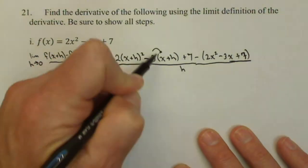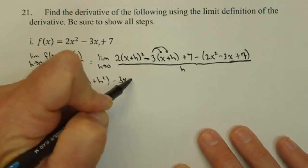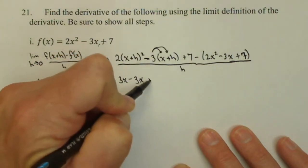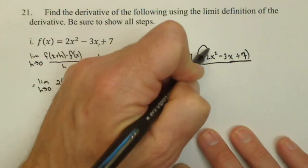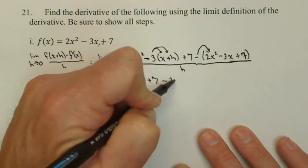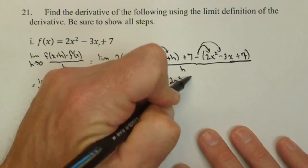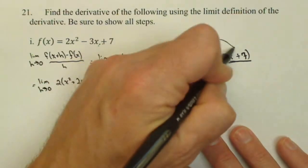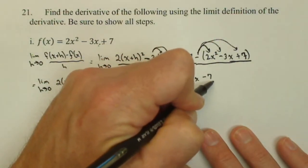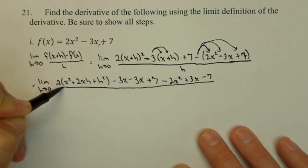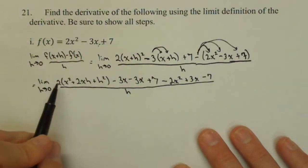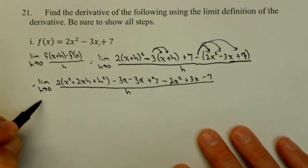so minus 3x minus 3h plus 7 minus 2x squared plus 3x minus 7 all over h. I do need to distribute this too, and we'll do some canceling, and we should be almost there.